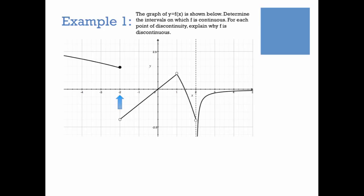We should immediately notice three points of importance: x equals negative 2, where something's going wrong; x equals 1, where something's up; and x equals 2, where the asymptote indicates something important is happening. At this point, maybe hit pause and think about where the function is discontinuous and why, and from that information identify the intervals on which the function is continuous.